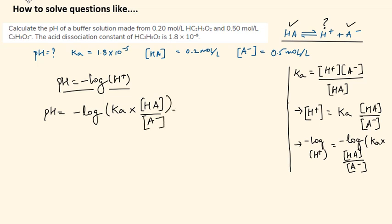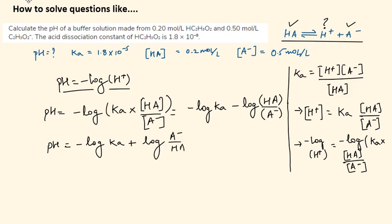Negative log of Ka times HA over A minus can be simplified further. By using the property of logs we can say that it equals negative log of Ka minus log of HA over A minus. Simplifying this further would give us negative log of Ka plus log of A minus over HA, if I invert this fraction.